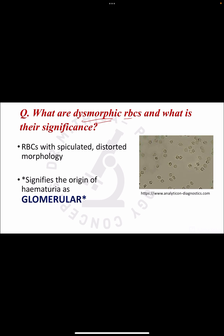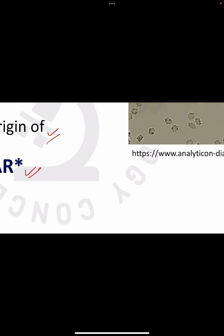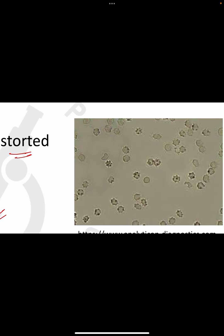The next question is: what are dysmorphic RBCs and what is their significance? When RBCs are spiculated and distorted in morphology, they are known as dysmorphic RBCs. They signify that the origin of the hematuria is glomerular. A common cause is glomerulonephritis. In the picture shown, you can see these spiculated RBCs with distorted morphology.